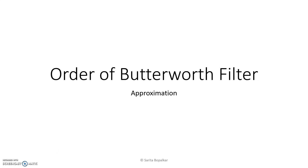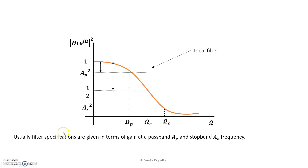Hello and welcome. Let us discuss the order of the Butterworth filter in this video. We know the Butterworth approximation function is a monotonically decreasing function. We are trying to approximate the ideal frequency response, which has a constant magnitude over the pass band and zero magnitude over the stop band. We are trying to approximate this ideal frequency response with the Butterworth approximation function.